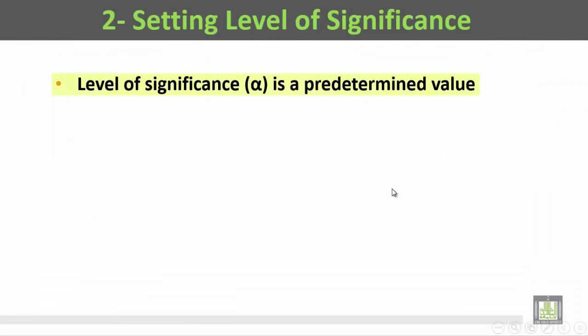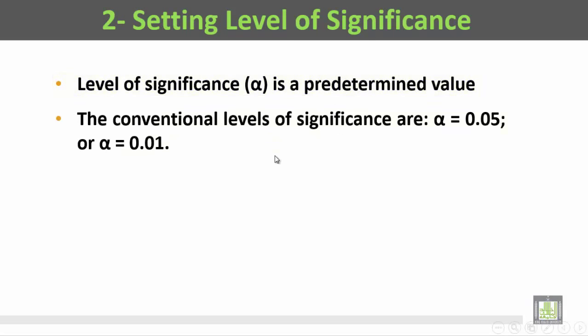The second step is setting level of significance. The level of significance (alpha) is a predetermined value. The conventional levels of significance are alpha = 0.05 or alpha = 0.01.